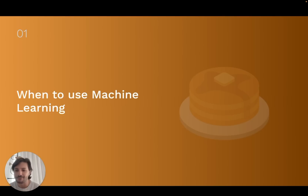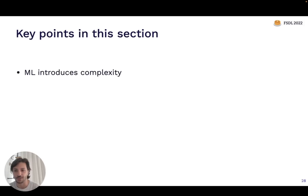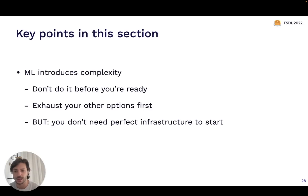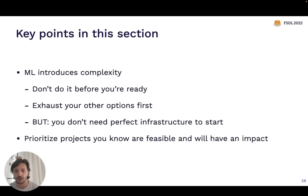The next topic is when to use machine learning at all — what problems is this technology useful for solving? The key points we're going to cover are: first, machine learning introduces a lot of complexity, so you really shouldn't do it before you're ready and should exhaust other options first. On the flip side, that doesn't mean you need perfect infrastructure to get started. Then we'll talk about what types of projects tend to lend themselves to being good applications of machine learning, and how to know whether projects are feasible and will have an impact.